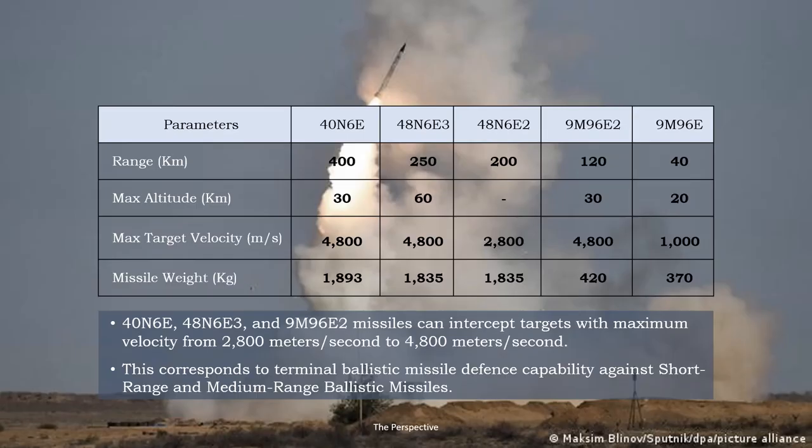The S-400 system uses five types of missiles which provide a range from 40 kilometers to 400 kilometers. Some of these missiles also have anti-ballistic missile capability which allows them to intercept missiles with terminal velocities in the range of 2,800 meters per second to 4,800 meters per second.